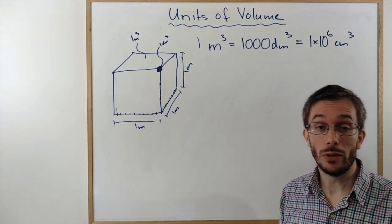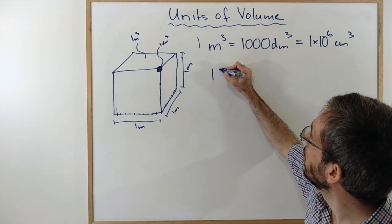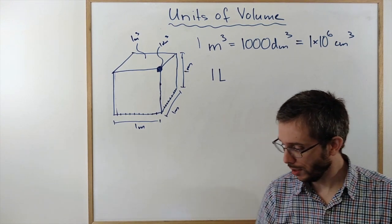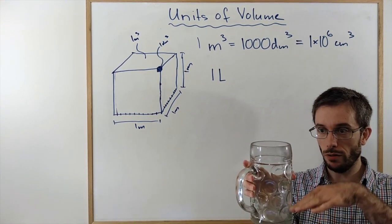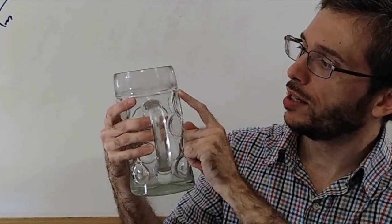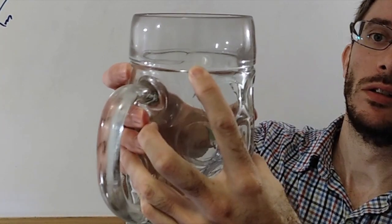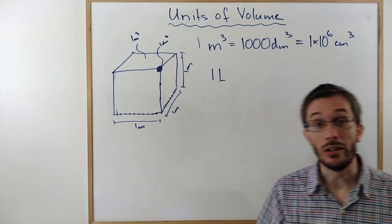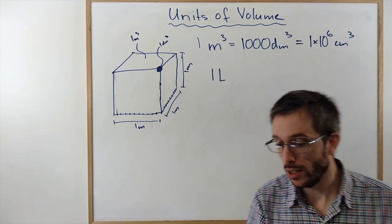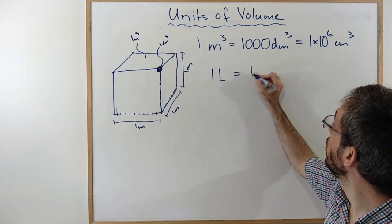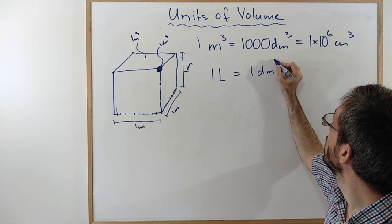There are other units that are frequently used. One of them is the liter. What is a liter? A liter is the amount of liquid that I can put into this glass up to this line. It actually says right here, 1 liter. So this is about 1 liter. Believe it or not, but the liter is actually a metric unit. It is defined as 1 decimeter cube.